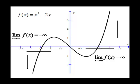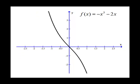Now if we switch the sign on the x cubed term and make it negative, notice how the graph changes — in particular, notice how its end behavior changed. Now when we go in the positive x direction, the y values are going to negative infinity. So we would say the limit as x goes to positive infinity of f of x is equal to negative infinity.